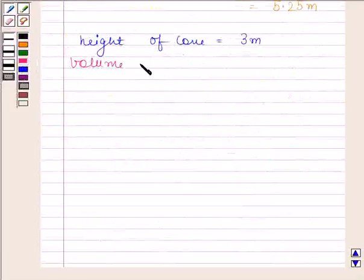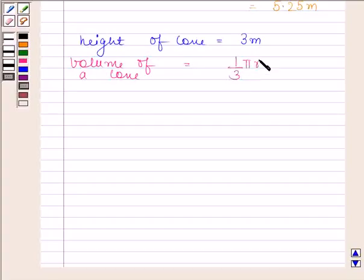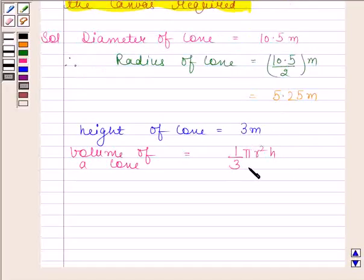We know that volume of a cone is equal to 1 by 3 pi r square h. We know the value of r and h, so we can easily find volume. By substituting values of r and h in this,